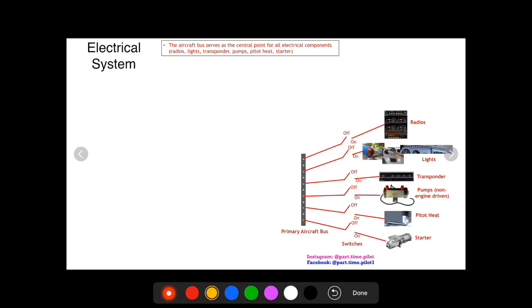So these switches are going to be found in the cockpit on your dashboard, and so when you flip the radios on, essentially what you're doing is you are connecting the radios to this primary aircraft bus, telling that bus to provide the radios with some electricity.